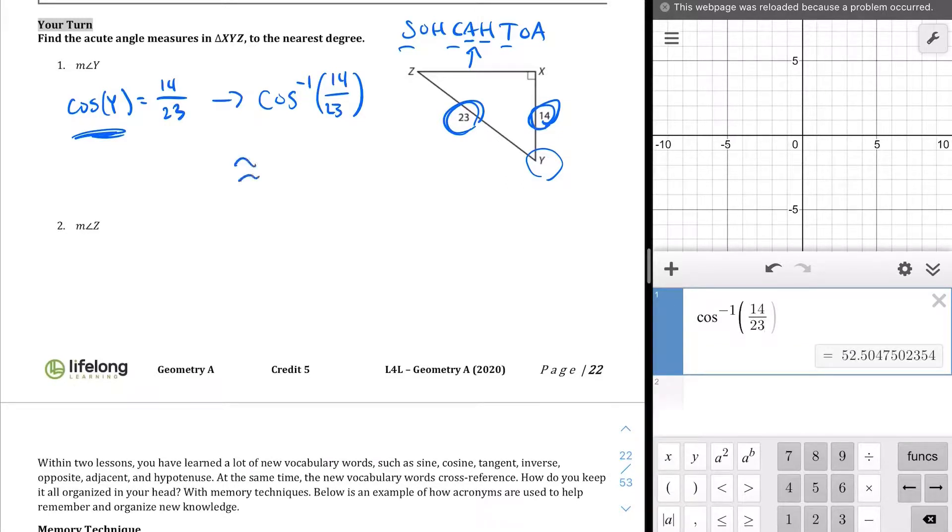So, inverse cosine of 14 divided by 23 gives us 52 and a half. So, there's our angle. It's approximately 52.5 degrees. Measure of angle Y. Okay, so that's the answer to that one.